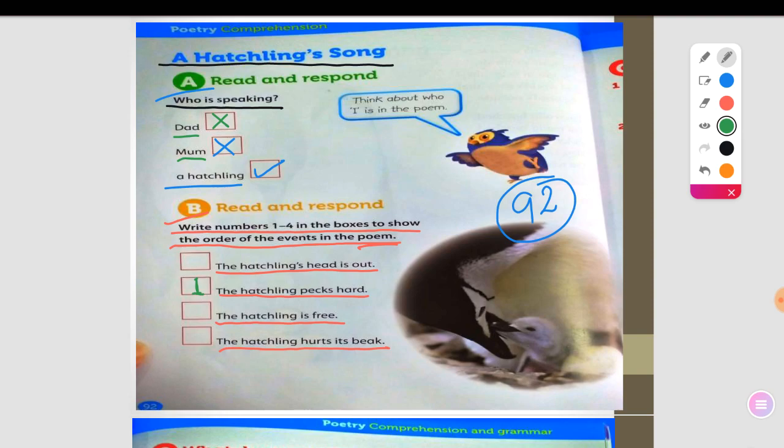So what is the next event? Yes. Because the hatchling pecking hard, so it hurts its beak. So the hatchling hurts its beak. You get it?